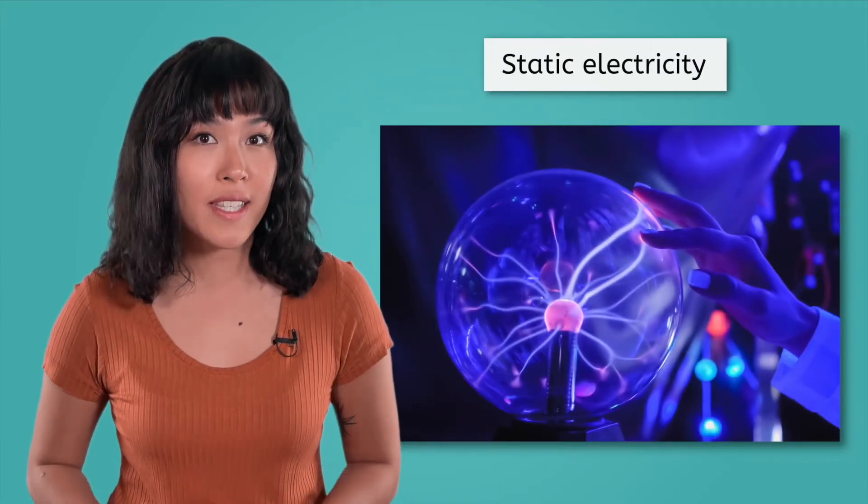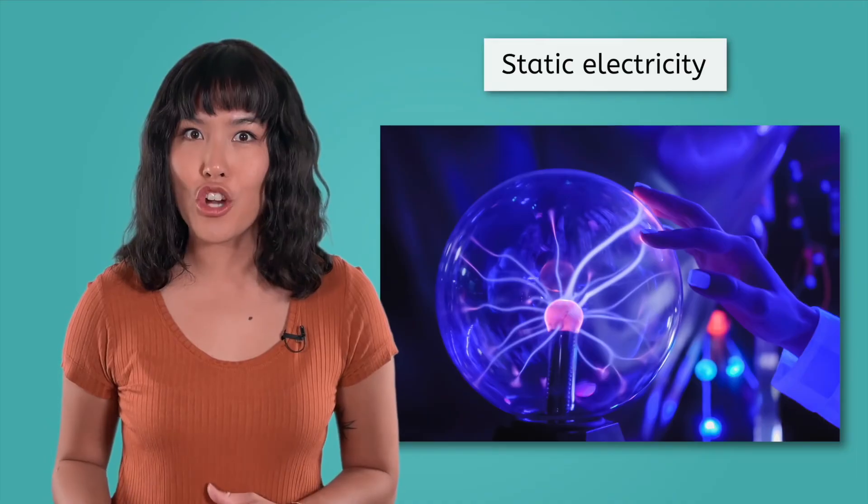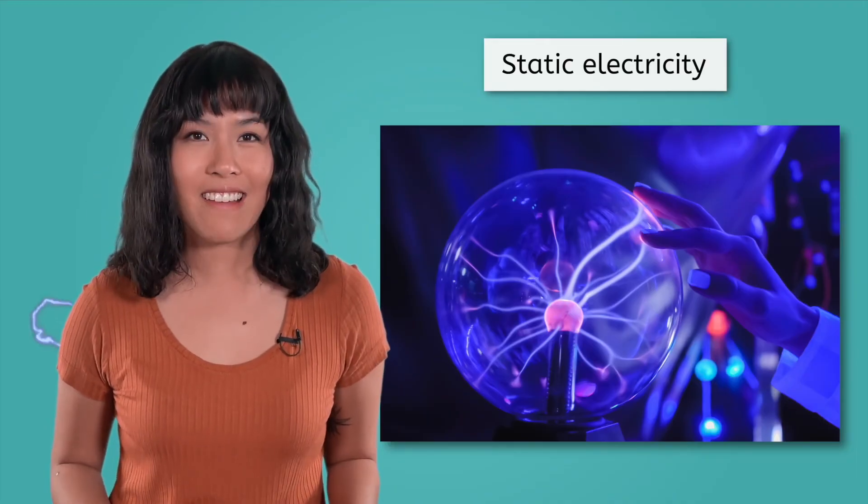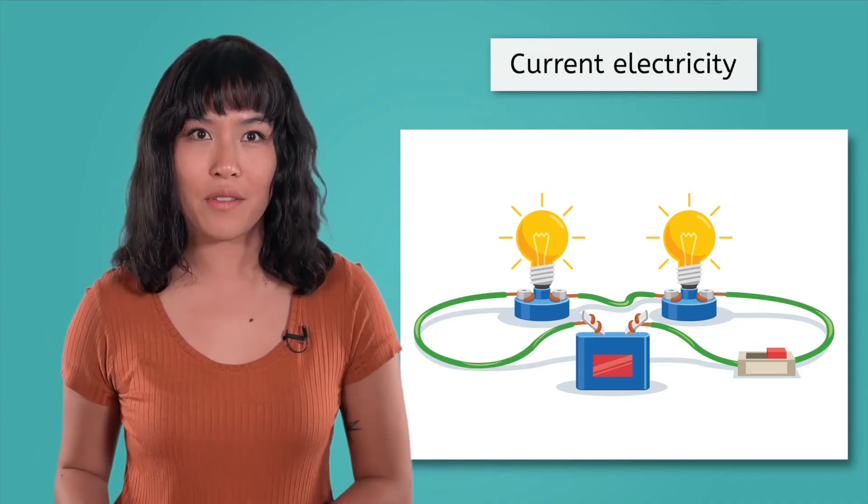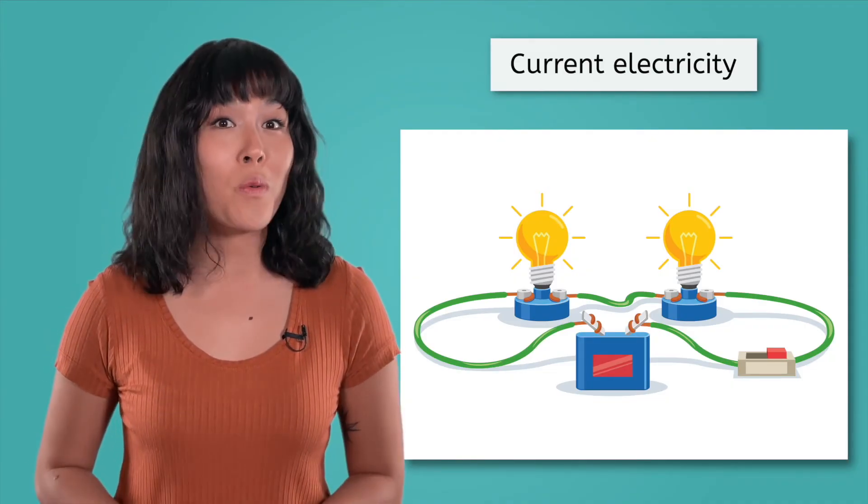As we went through the lesson today, we got a brief glimpse of some of the topics we'll be exploring in this unit. Over the next few lessons, we'll investigate how electricity can cause static charge, like lightning, and how it can exist as an electrical current through wires, providing power to our homes and devices.